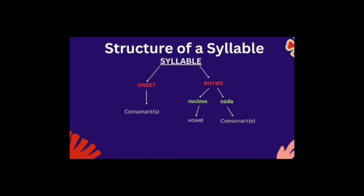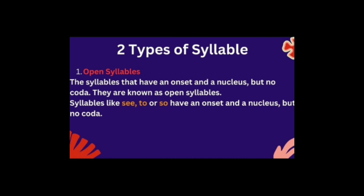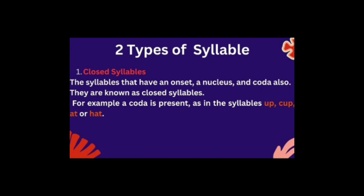There are two types of syllables. Open syllables have an onset and a nucleus but no coda. Closed syllables have an onset, a nucleus, and a coda as well. For example, 'up' and 'cup', 'hat' and 'at' — in 'up' and 'cup', /p/ is the coda; in 'hat' and 'at', /t/ is the coda. Since these syllables have a coda, they are called closed syllables.